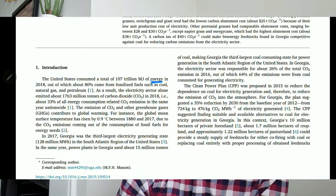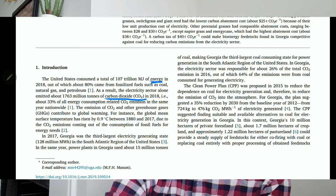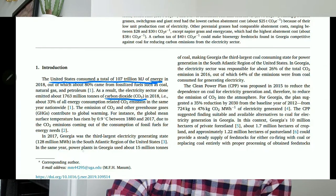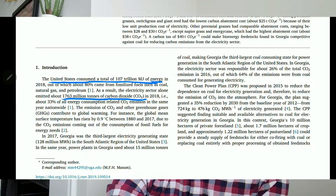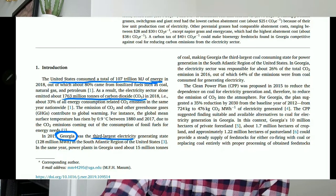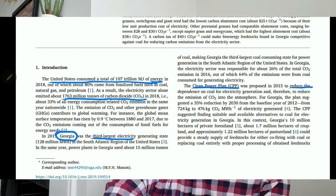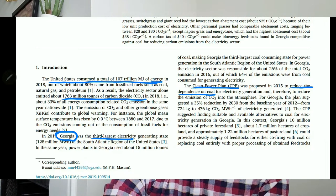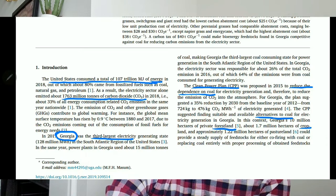The background of my research was that we are using a lot of energy and emitting a lot of carbon dioxide in the process. I showed that the United States consumed a great deal of energy in 2018 and emitted a lot of carbon dioxide. My study area was Georgia — the third largest electricity generating state — and the Clean Power Plan requires reducing dependence on coal, which is very carbon intensive.